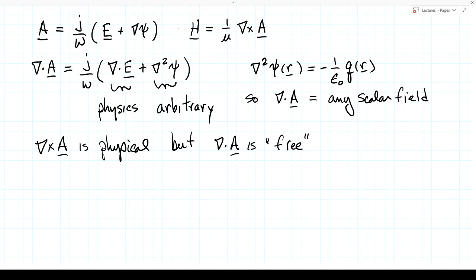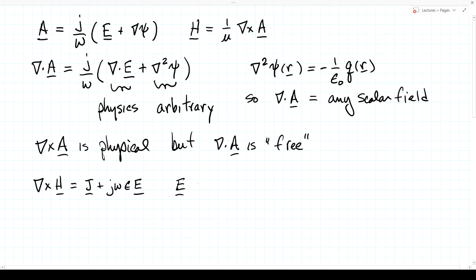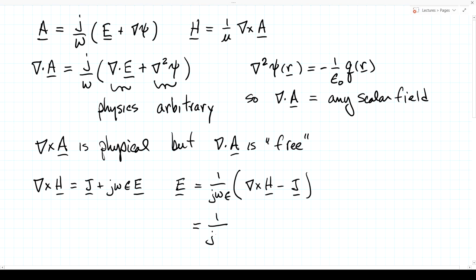So we know how to get the magnetic field from A: H = (1/μ)∇×A. Let's see how to get the electric field by working with Ampere's law: curl of H equals J + jωεE. Let's solve for E: dividing by jωε gives one over jωε times (curl of H minus J). But what is the curl of H? Well, H equals (1/μ)∇×A, so plugging that in gives E = (1/jωε) times [(1/μ)∇×∇×A minus J].